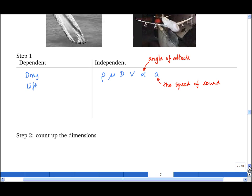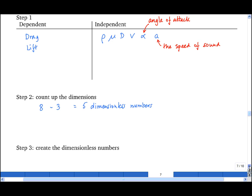Now we count up the dimensions and the number of variables. There are eight variables. Once again, there are three dimensions: kilograms, meters, and seconds. That means we're expecting five dimensionless numbers.